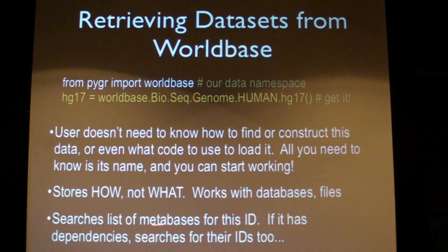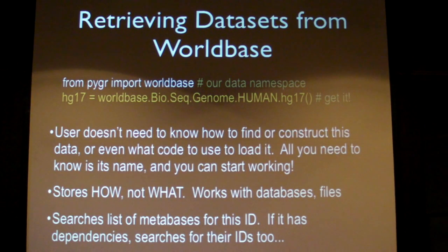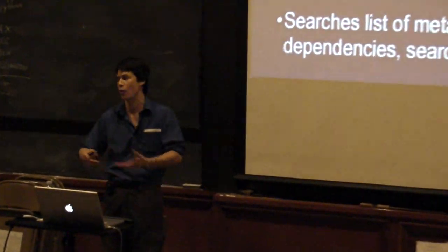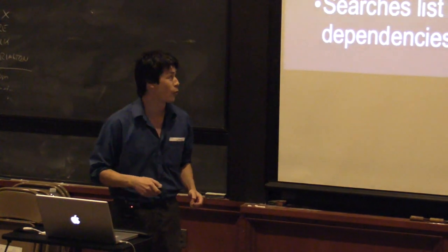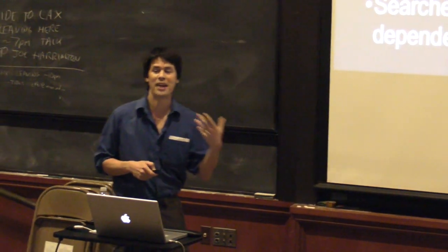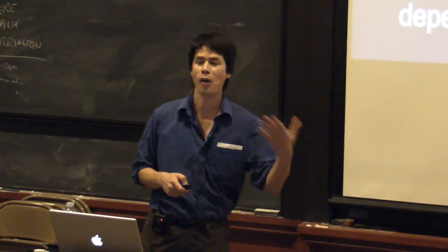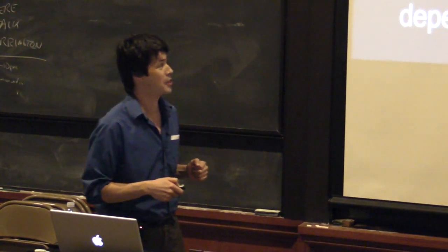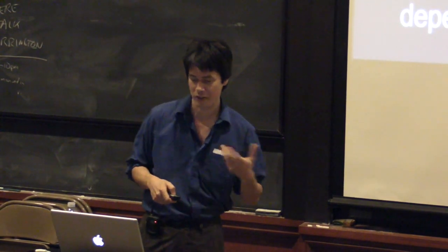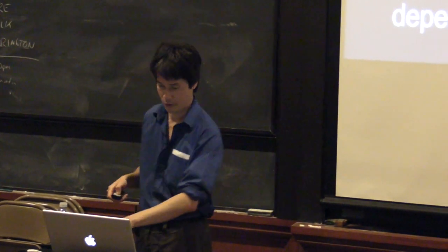What WorldBase stores is not the actual data. We assume that if someone has a big dataset, they've already got classes that can store that data on disk, or access it from a database server. What we have instead is the metadata: how do you access this data? What classes have to be used? What are the dependencies? What is the schema?